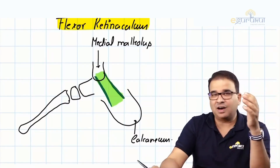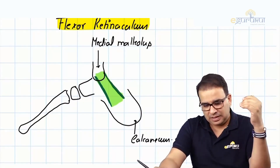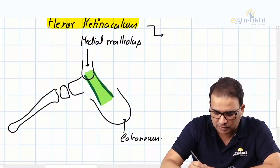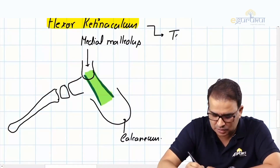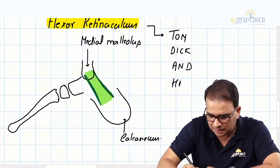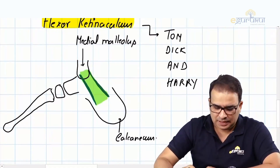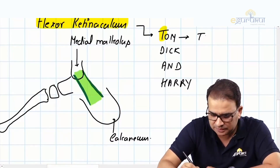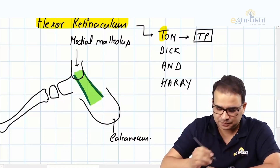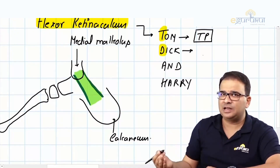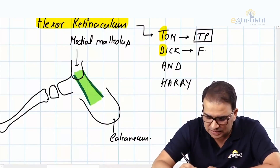The main question is how the structures are arranged deep to the flexor retinaculum. Going from medial to lateral, they can be remembered with the mnemonic Tom, Dick, and Harry. T reminds us of the muscle tibialis posterior. D reminds us of flexor digitorum longus — since it's a flexor retinaculum, it is the flexor digitorum longus.